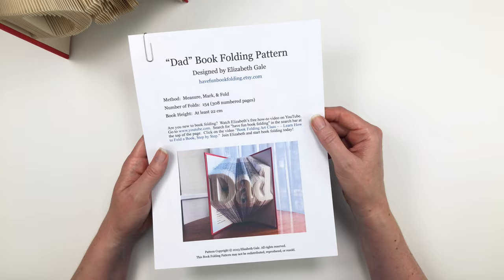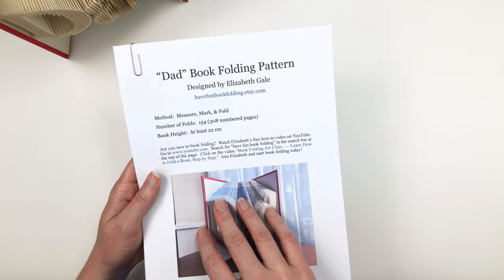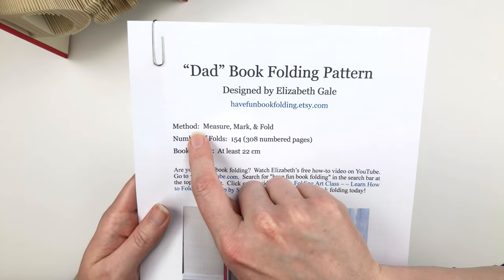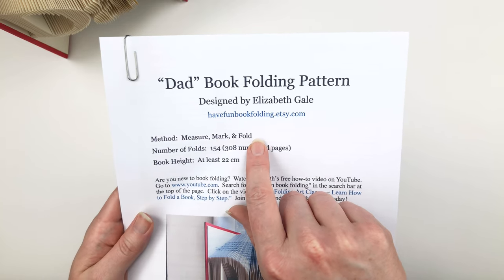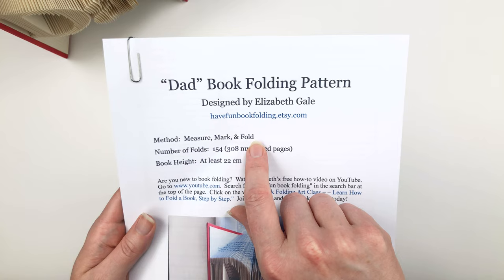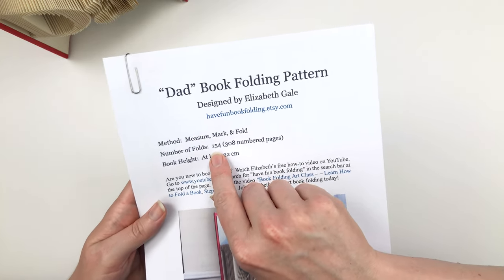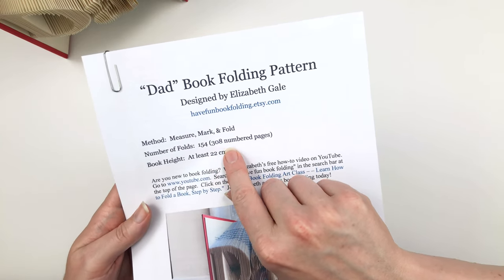So let's look back at that. This cover page gives you specific information about the project. If you look right here, you'll see that the method we'll be using is the traditional measure, mark, and fold method. There is no cutting required for this pattern, only folding. Next, you'll see the number of folds is 154, which is 308 numbered pages.